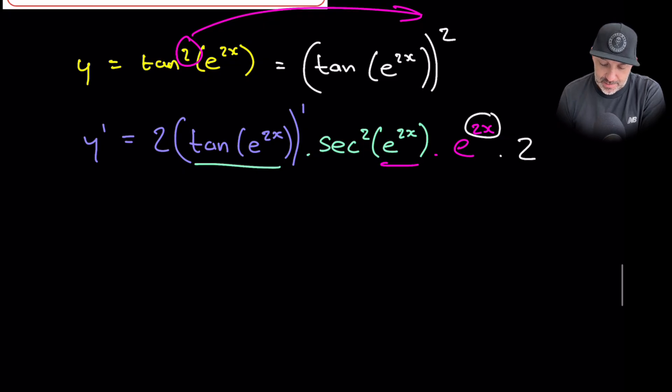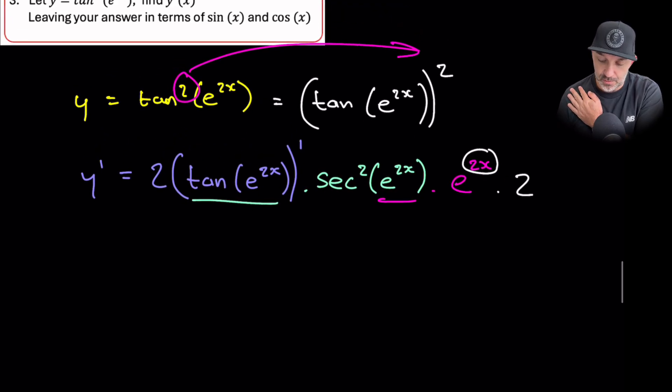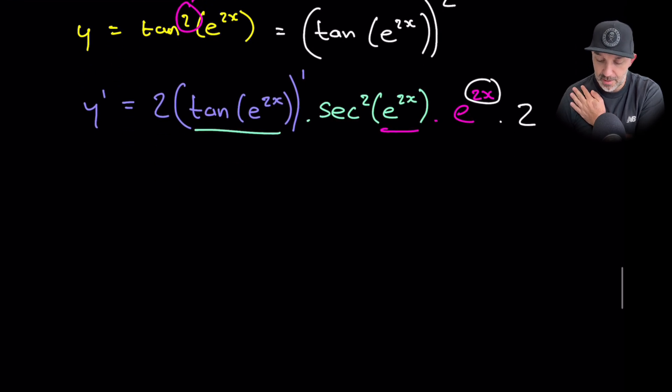And then it says leave your answer in terms of sine and cos, which is not correct at the moment. We have tan and we've got sec. So let's just tidy some of this up. So first of all, we've got 2 times 2 going to be 4.